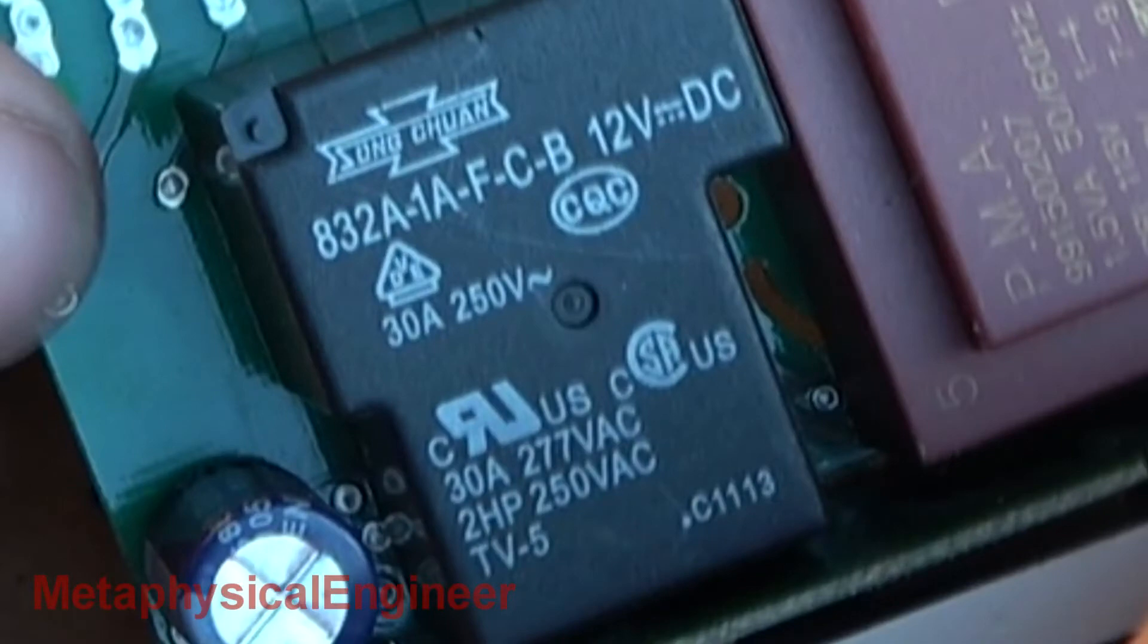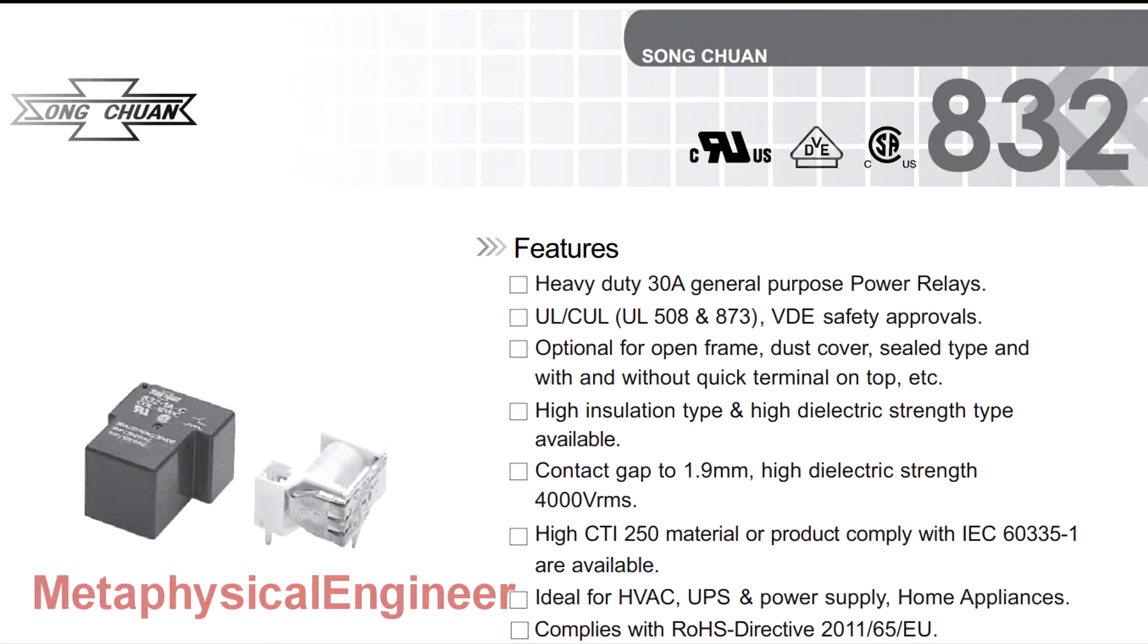Let's compare the specs of the relay to the conditions it faced. It wasn't running a very big cooler, with a compressor rated load amps of about 7, an inrush current in the 40 amp range. The relay claims to be a general purpose, heavy duty power relay in normally open, single pole layout, with suitability for HVAC applications.